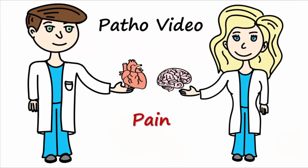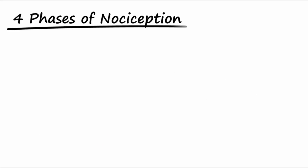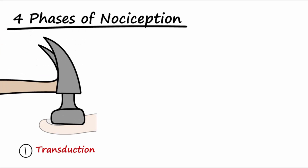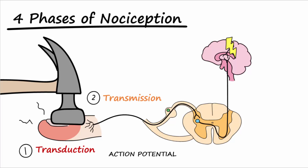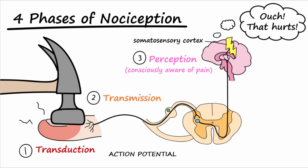Our topic today is pain transduction. There are four phases of nociception, including transduction, which is the process of converting painful stimuli into electrical signals. This electrical signal, or action potential, can then travel to the brain by way of first, second, and third order neurons — this is called transmission. When the pain signal reaches the somatosensory cortex of the parietal lobe, the individual becomes consciously aware they are in pain, and this is called perception. The central nervous system has mechanisms to augment or blunt pain signals, and this is called pain modulation.